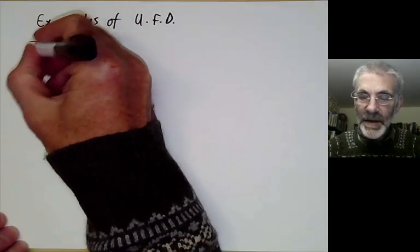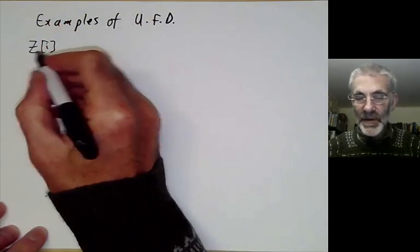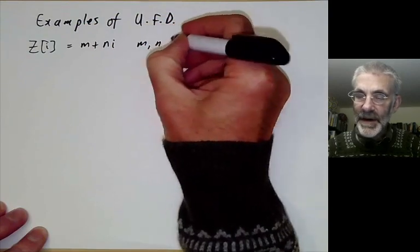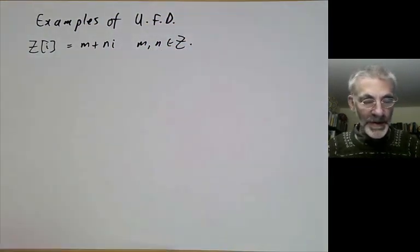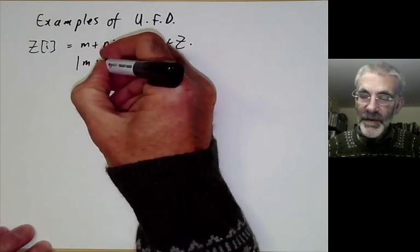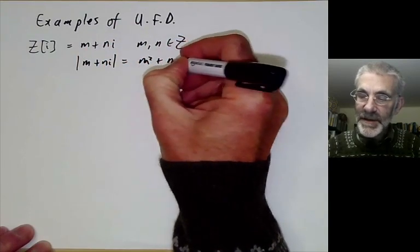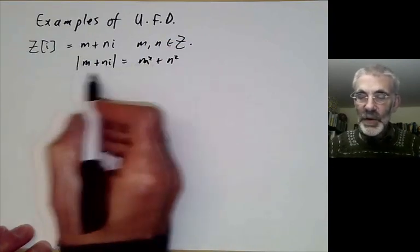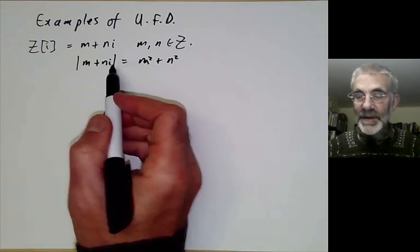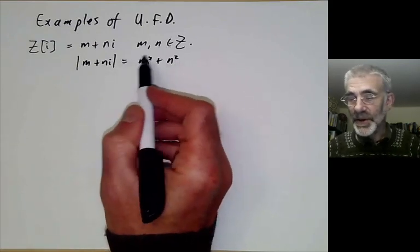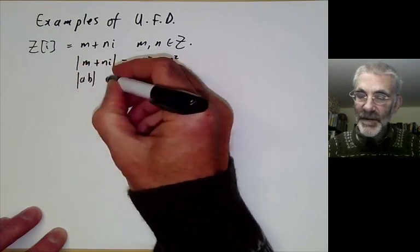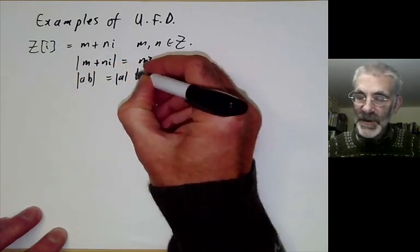We're first going to look at the ring of Gaussian integers, where you add the square root of minus 1 to Z. This is all numbers of the form m plus ni with m and n integers. We saw last lecture that this is a unique factorization domain. We define the absolute value of m plus ni to be m squared plus n squared — the square of the usual absolute value from complex analysis — so that the absolute value of a Gaussian integer is still an integer. In particular, the absolute value of a·b equals the absolute value of a times the absolute value of b.